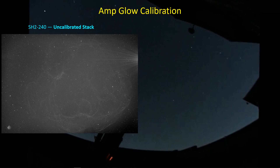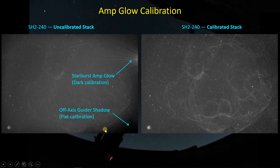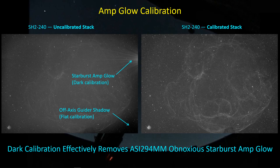And then there's the amp glow calibration issue. As we all know, if you've taken a look at the darks from this ASI 294, the starburst amp glow is basically ridiculous. There are these streaks of light that go off basically a quarter of the width. Because this image is just a stacked image of uncalibrated frames, I also have a shadow of my off-axis guider down in this corner. When I take the same data, calibrate, and stack it, the flat frames successfully eliminate the shadow, and most importantly, the dark frames have eliminated any trace of that ridiculous starburst amp glow. For those of you who might still be holding off buying one of these cameras, I think the dark frames will solve the problem pretty effectively.